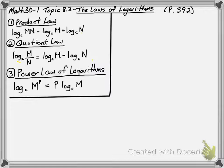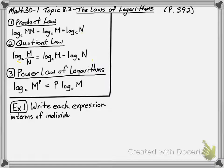Base c is going to be the same constant in all of them. Let's do an example. In example 1, we're going to write each expression in terms of individual logs of x, y, and z. In A, we have log base 5 of x times y divided by z.